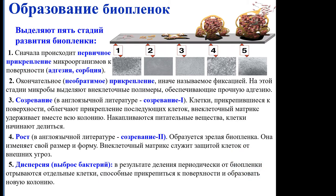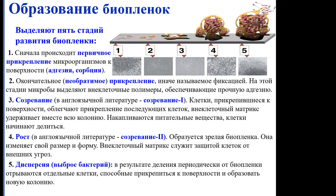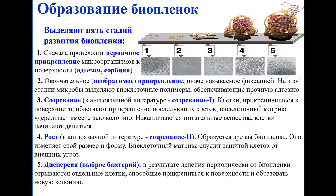The third stage is called maturing one. Cells attached to the surface make it simpler for other cells to attach, and the extracellular matrix keeps together the whole colony; nutrients accumulate and cells start dividing within the biofilm. The fourth stage is called growth, or maturing part two: a mature biofilm is formed which changes its size and form in the extracellular matrix, serving as protection for cells against external threats. Stage five is about dispersion or ejection of bacteria.